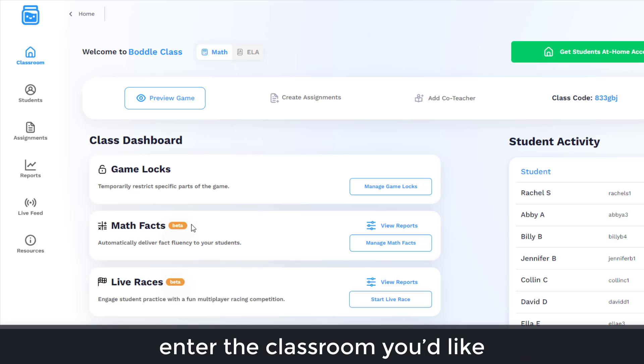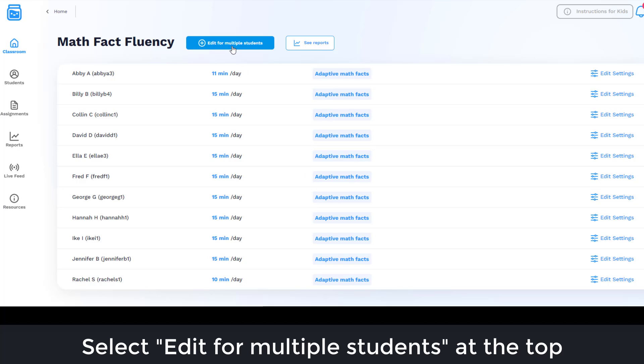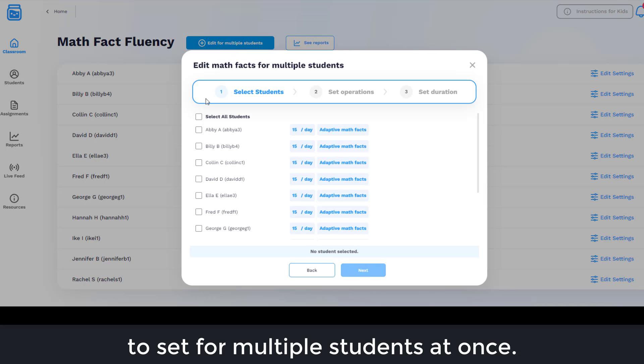Enter the classroom you'd like, and in the center of the classroom page, click Manage Math Facts. This will open the Math Fact Fluency page. Select Edit for Multiple Students at the top to set for multiple students at once.